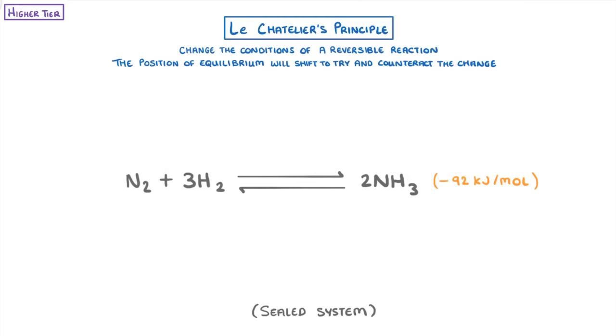The minus 92 kilojoules per mole is the overall energy change of the forward reaction. And because it's negative, we can tell that the forward reaction is exothermic, which means it releases energy to the surroundings. And because the backward reaction has to be the opposite of the forward reaction, it must be endothermic.